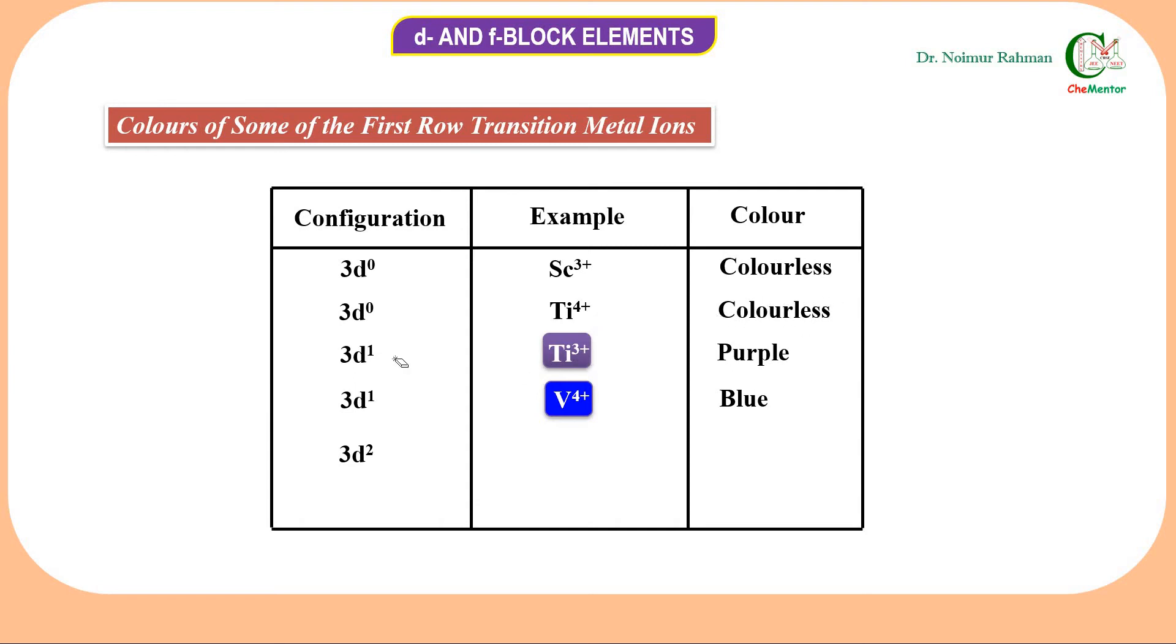But in case of Titanium 3 plus, there is one d-electron, there is a possibility of d-d transition, and hence it shows purple color. Similarly, V⁴⁺ and V³⁺ also show color because there is a possibility of d-d transition due to the presence of d-electrons. So what we can conclude is that in order to show color, the d-subshell needs to be partially filled with d-electrons.